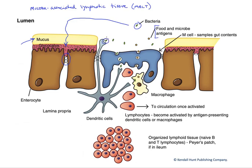One thing that's going to happen is we're going to phagocytose, using dendritic cell projections here, those foreign antigens. That's going to actually remove them. But the dendritic cell is an antigen-presenting cell — it's going to digest that bacterium and then present components of it to the B and T lymphocytes that are found underlying this mucosal layer.